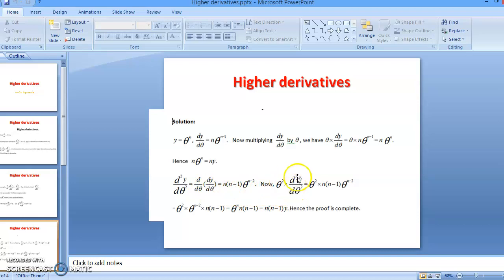Now, θ² multiplied by d²y/dθ² will be θ² multiplied by what we obtain as d²y/dθ², which is n(n - 1)θ^(n-2). So by the time we multiply this by this, you'll have θ² multiplied by θ^(n-2), multiply by n(n - 1).